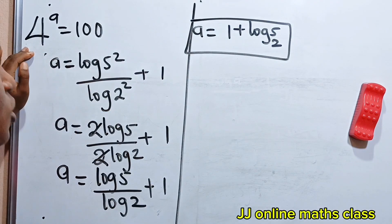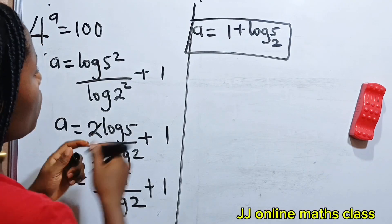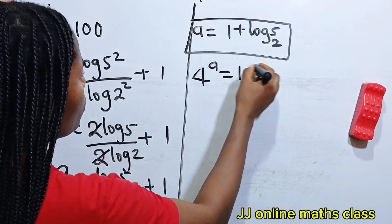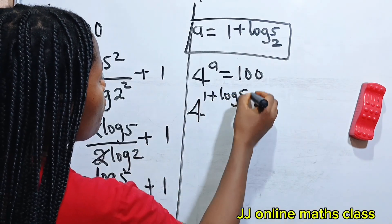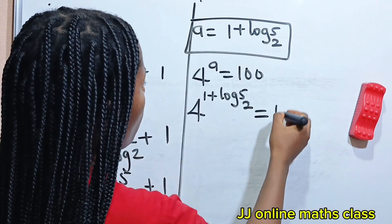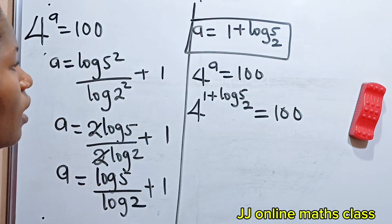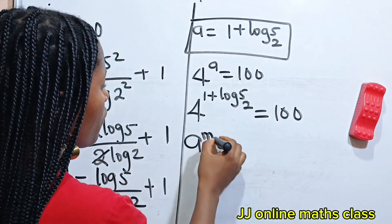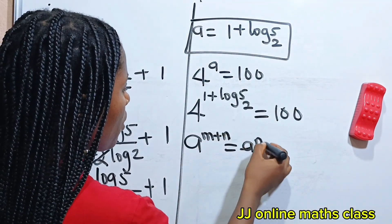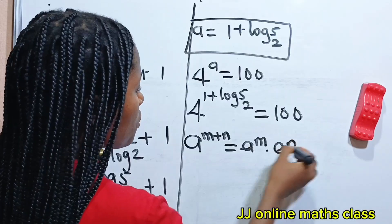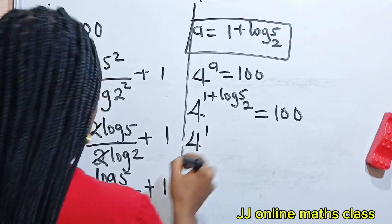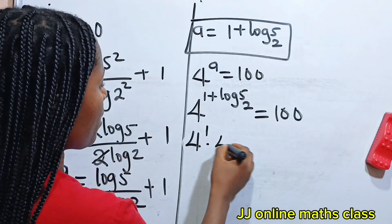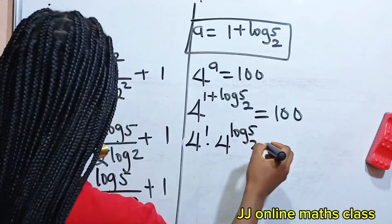Now let's see if this is actually true — will this give us the required solution? Remember that we are told that 4 to the power of A is equal to 100, so that means 4 to the power of 1 plus log 5 base 2 is equal to 100. Now when you have A to the power of M plus N, this is equal to A to the power of M multiplied by A to the power of N. So that means we can write this as 4 to the power of 1 multiplied by 4 to the power of log 5 base 2.